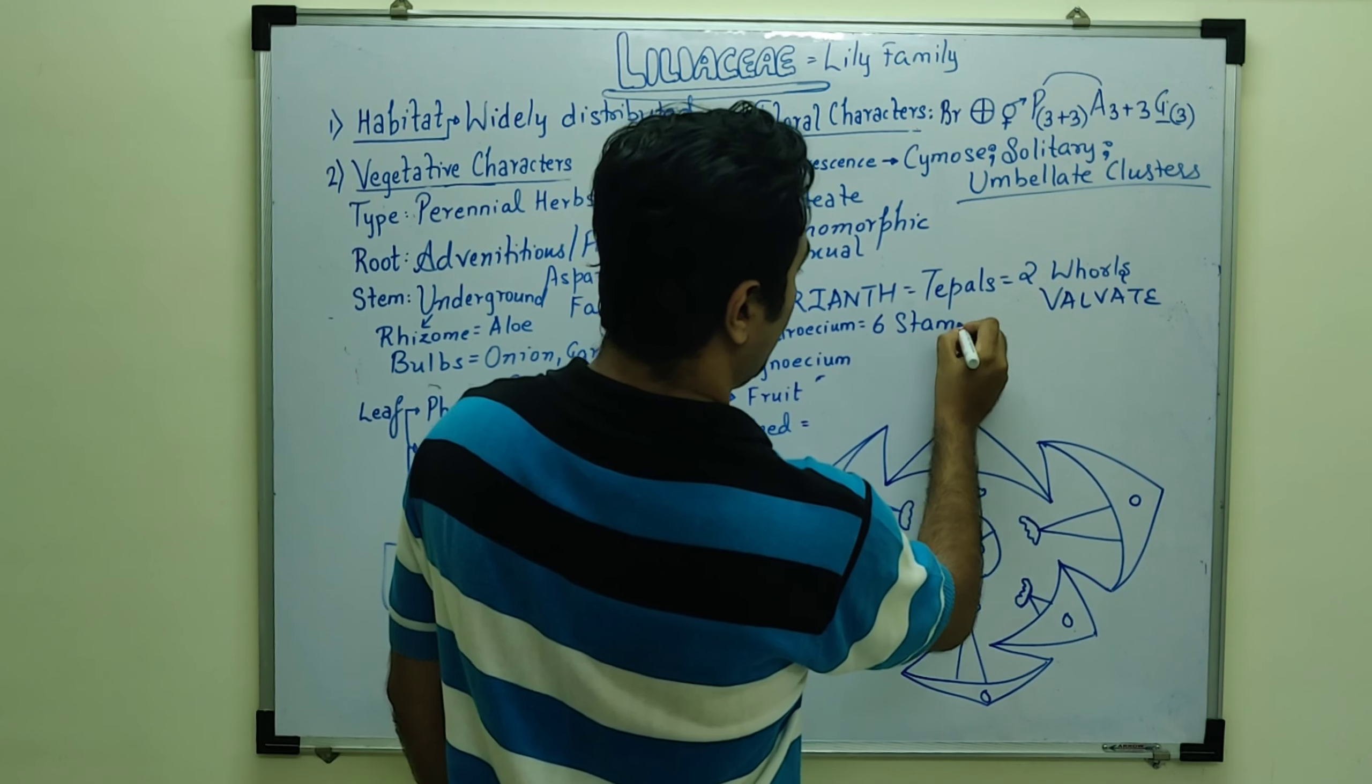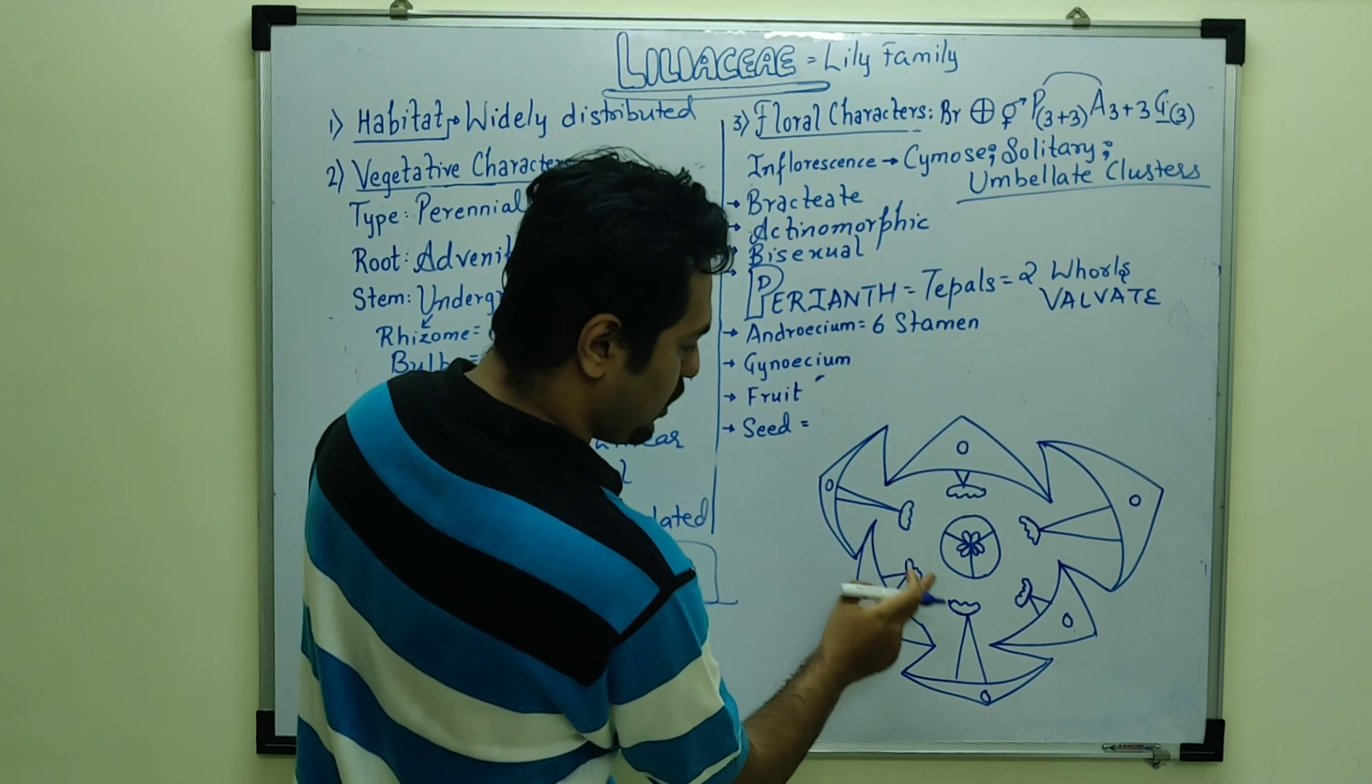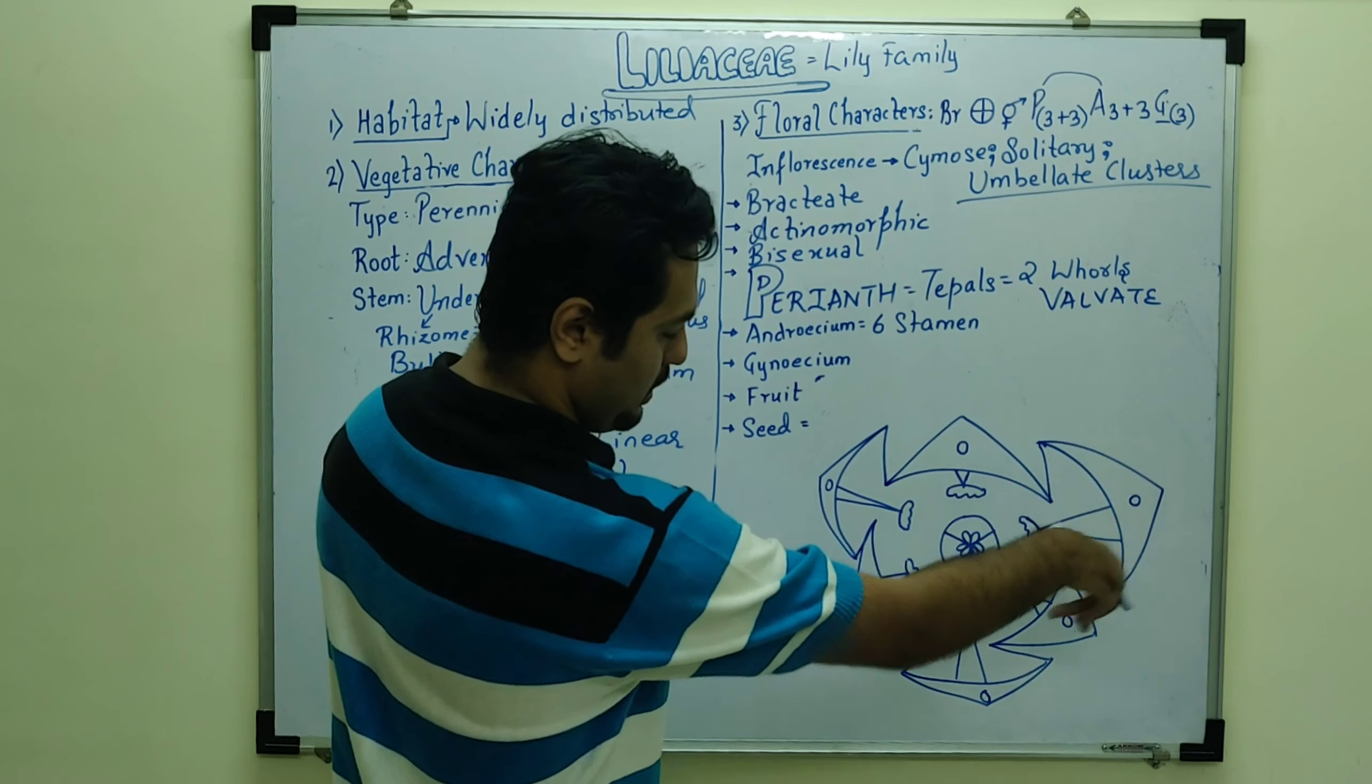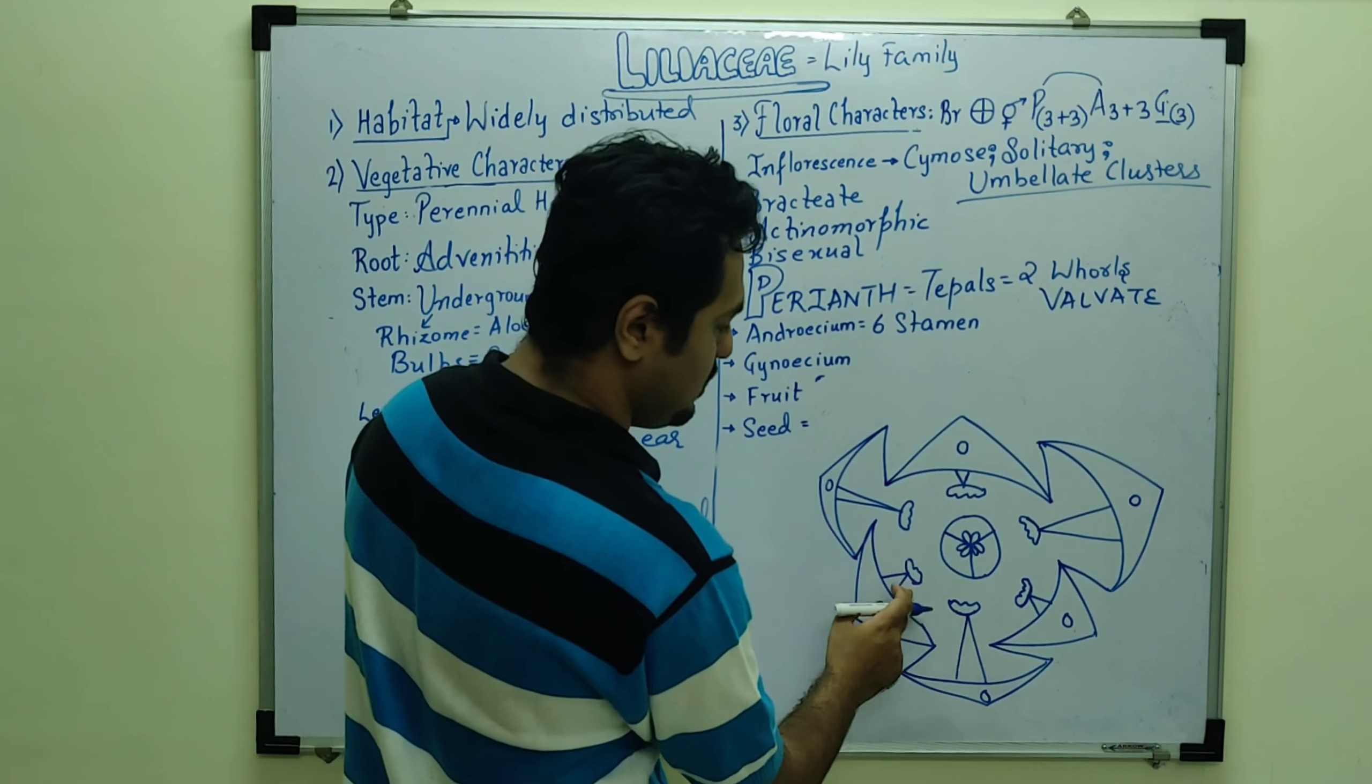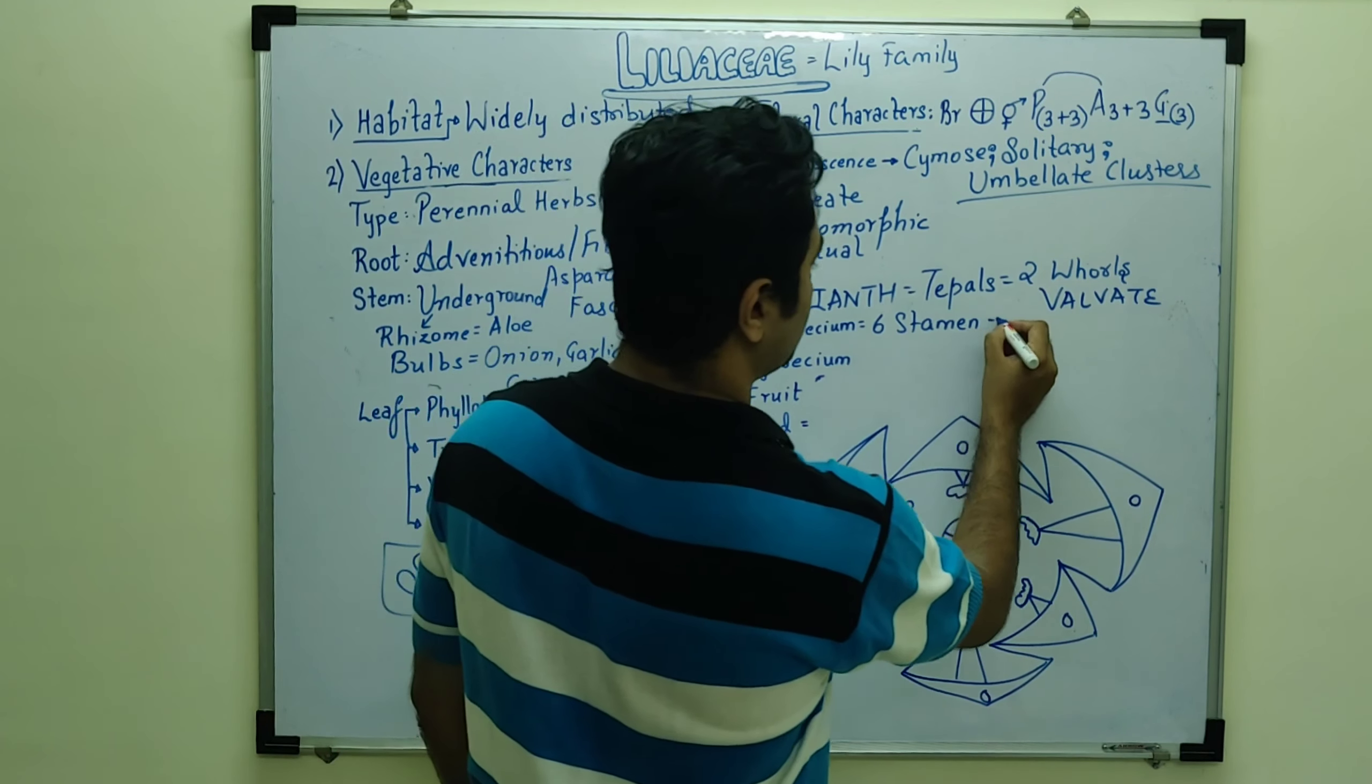And the type of aestivation is called valvate aestivation. So perianth is a characteristic feature of monocots which we have observed.